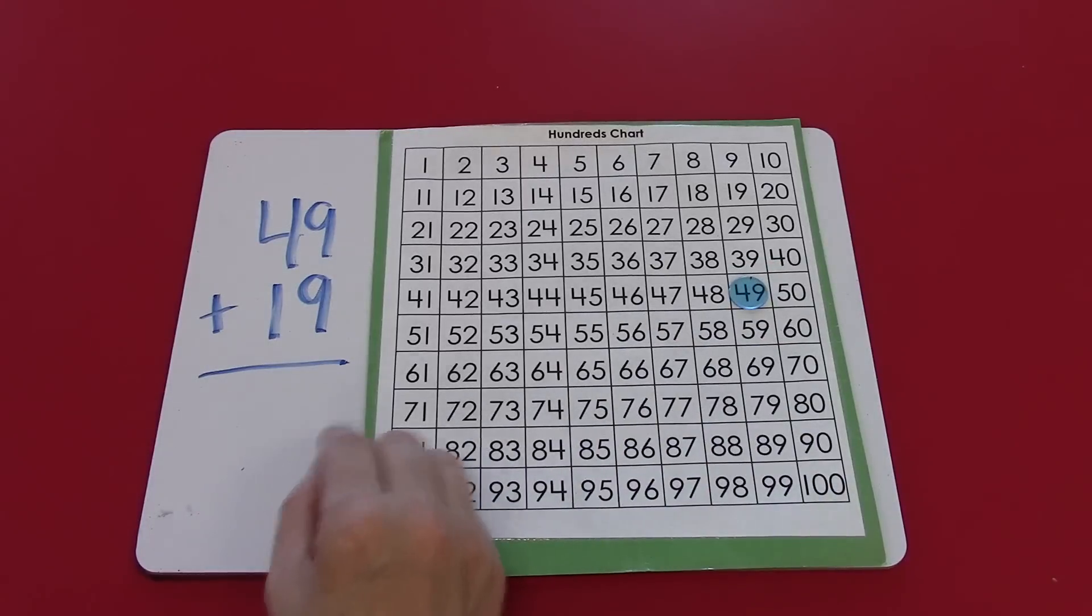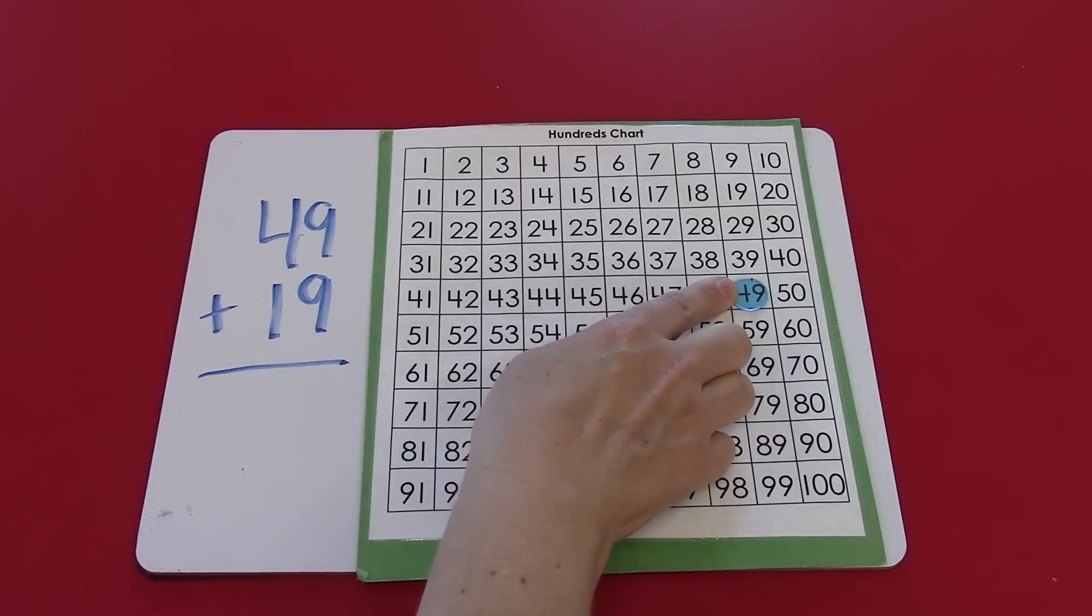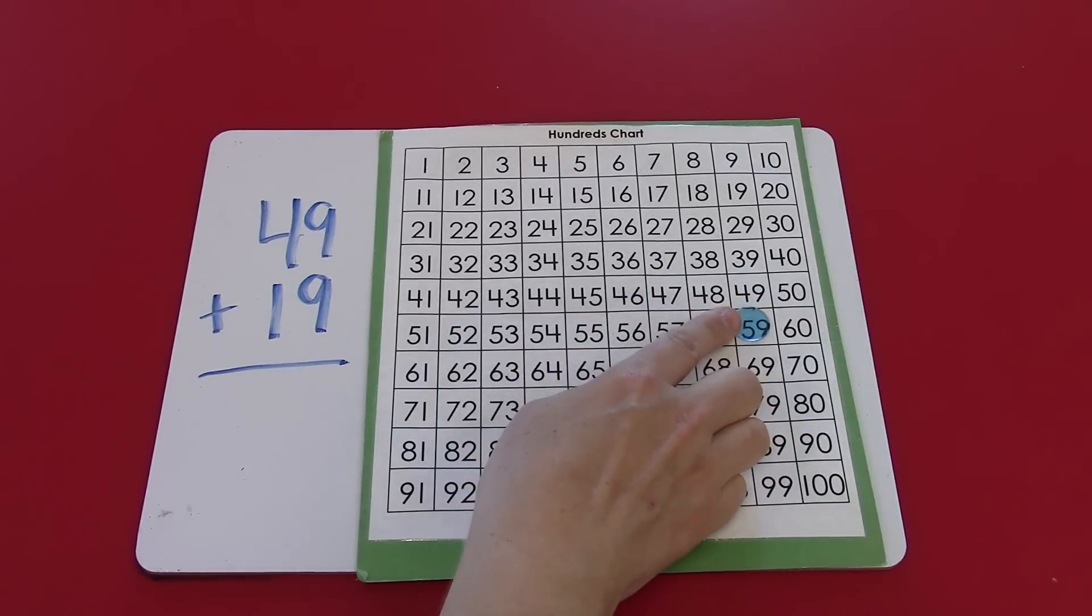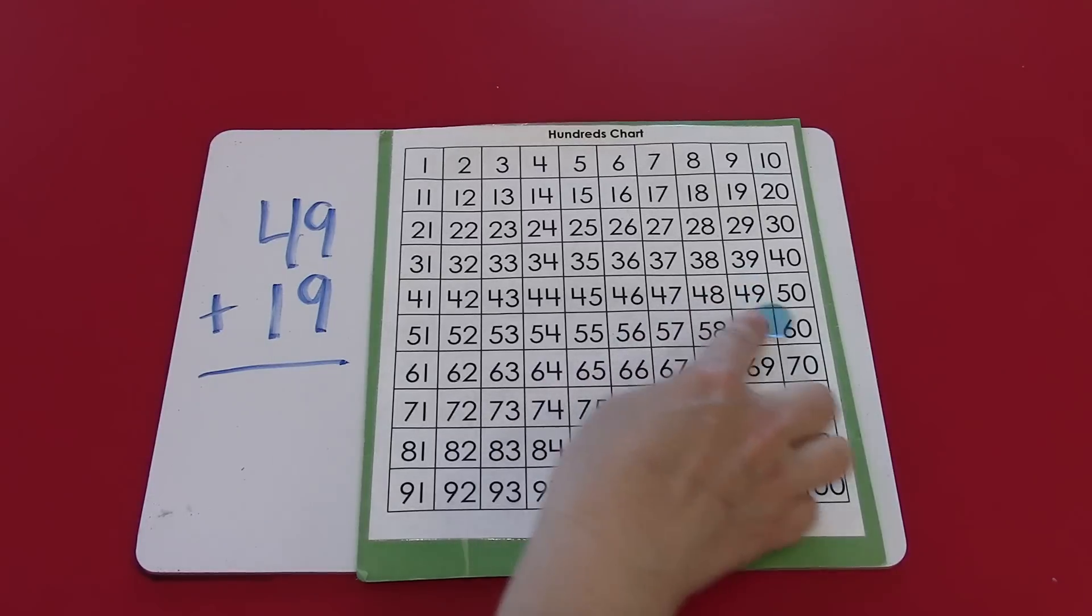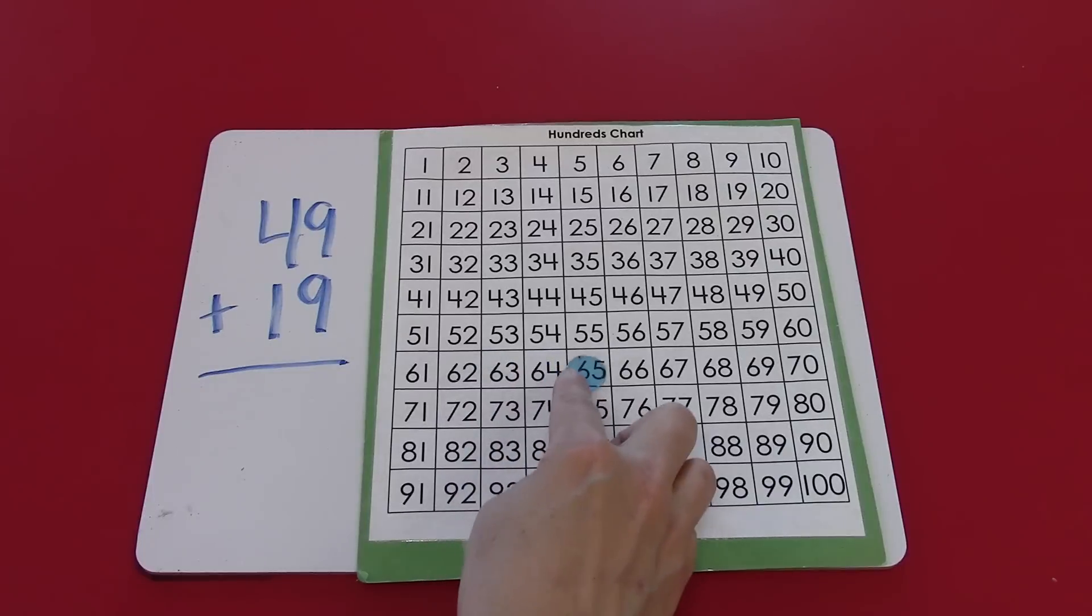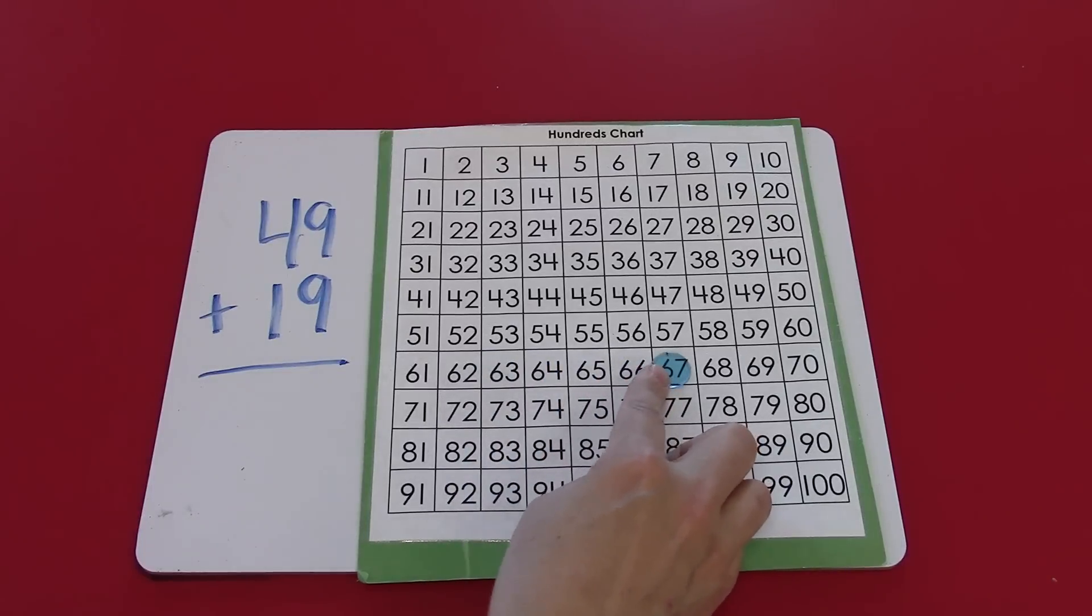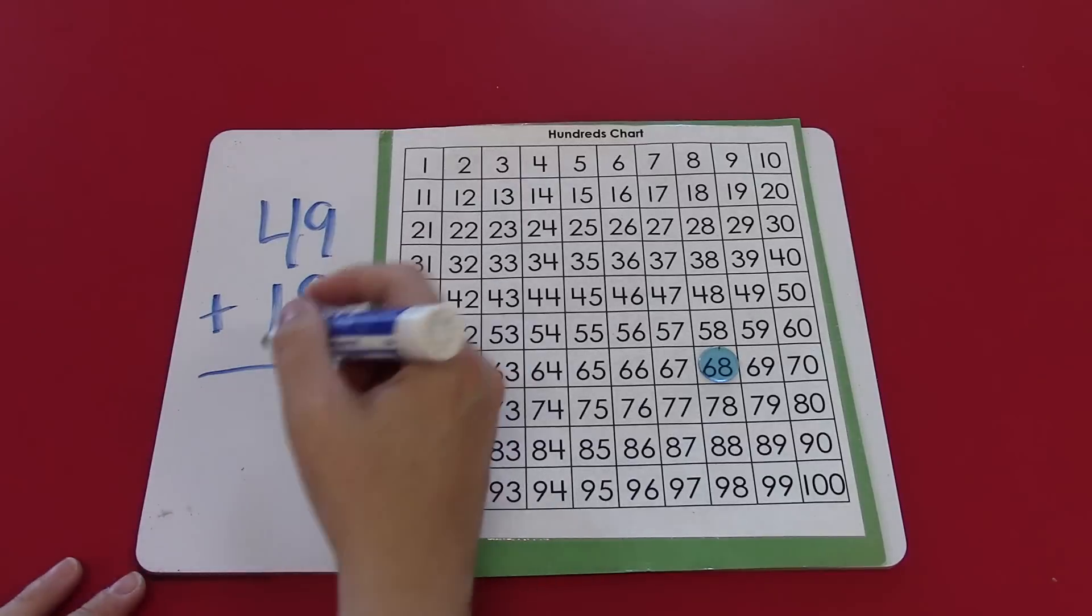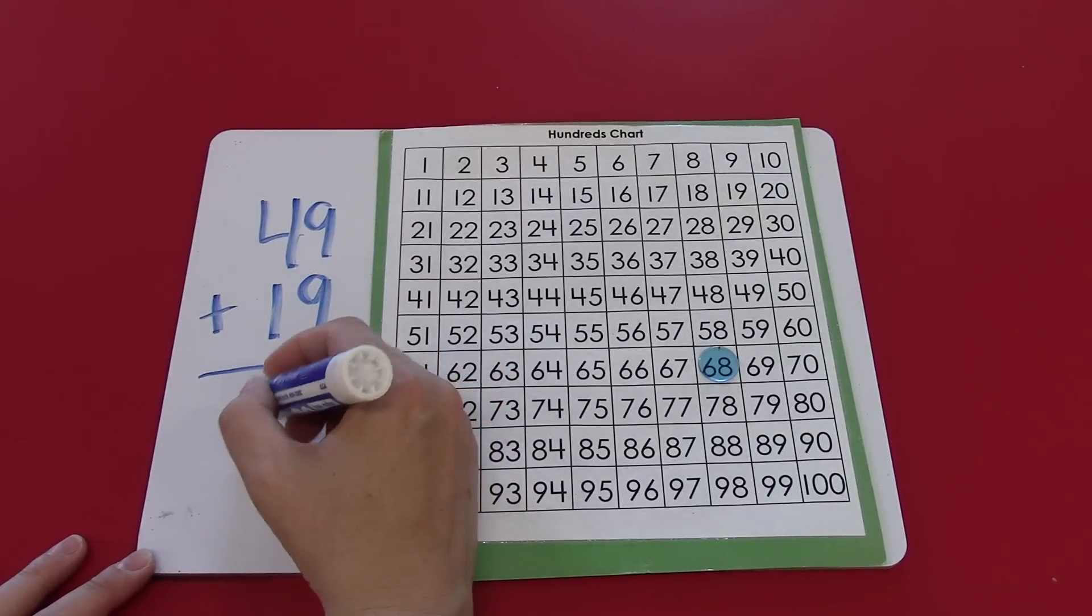49. 10 more is 59. So I'm at 10, 11, 12, 13, 14, 15, 16, 17, 18, 19. 49 plus 19 is 68.